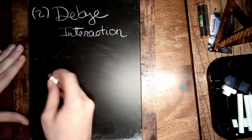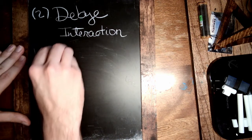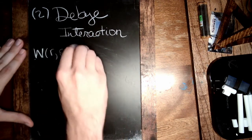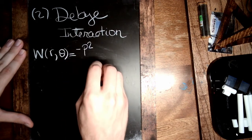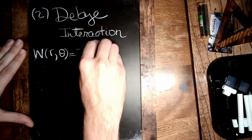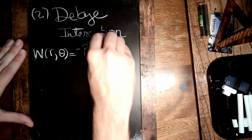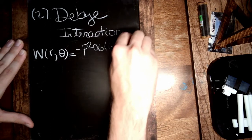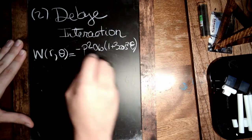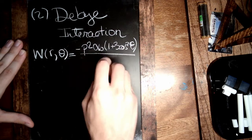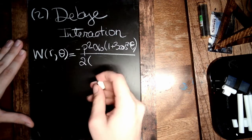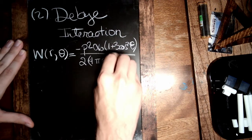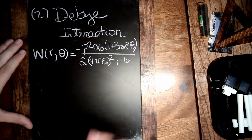So if we square our equation for the interaction energy, what do we get? We get minus P squared alpha zero, one plus three cosine squared theta. That took care of the one half, or the square root that we had. And we get a two from the one half. We get our favorite constant squared, now r to the sixth. That's a nice result.